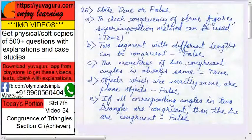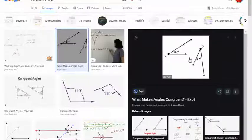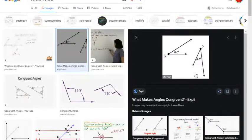The measures of two congruent angles is always the same - that is true. See this, these two angles G and S, they can be put in any direction, but if the measures are equal, they are congruent.